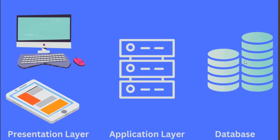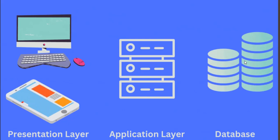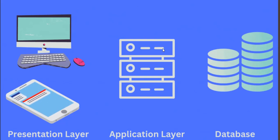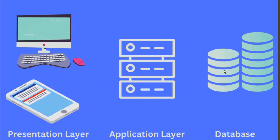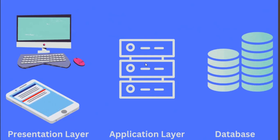If all the data is correct, it will go and sit in the database — that is one complete transaction written onto the database. Similarly, when you log in through a form, the server communicates with the database to check the correctness of the username and password. If valid, it will allow you to proceed; otherwise it will not. This is known as three-tier architecture.